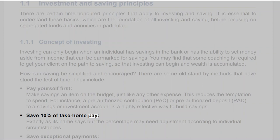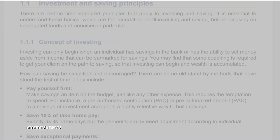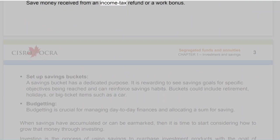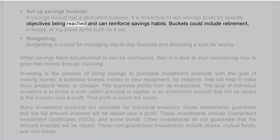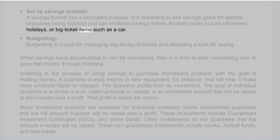Save 10% of take-home pay — exactly as its name says, but the percentage may need adjustment according to individual circumstances. Save exceptional payments — save money received from an income tax refund or a work bonus. Set up savings buckets — a savings bucket has a dedicated purpose. Buckets could include retirement, holidays, or big-ticket items such as a car.